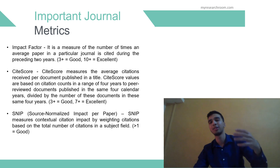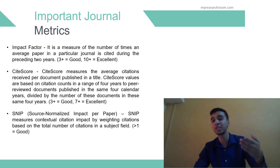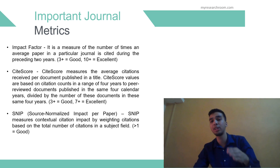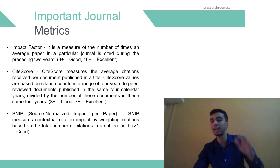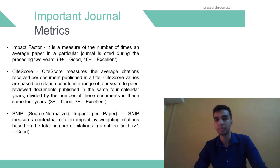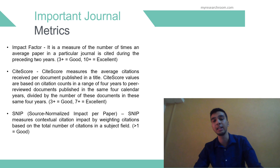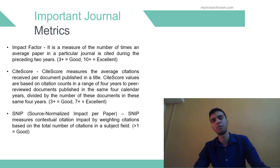The next is CiteScore. CiteScore measures the average citations received per document published in a title. CiteScore values are based on citation counts in a range of four years to peer-reviewed documents published in the same four-year calendar, divided by the number of those documents in the same four-year period. For example, to calculate the CiteScore of 2022, let A be the citations to articles, reviews, conference papers, and book chapters published from 2019 to 2022, and let B be the sum of articles, reviews, conference papers, data papers, and book chapters published between 2019 and 2022. So the CiteScore in 2022 will be A divided by B. CiteScore is available for most active serial titles on Scopus. A good CiteScore is 7 and above.